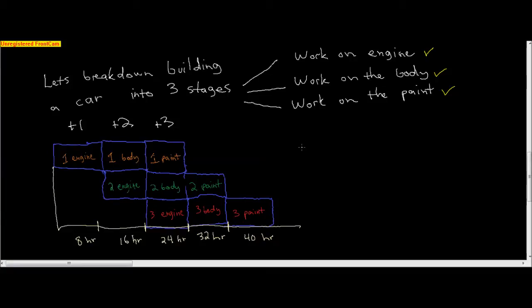If we break this into different steps, we can speed up the process by working on multiple stages at once. Before, it took 24 hours to build a car, times three to get three cars, so 72 hours total. Now we broke these into eight hour blocks. We did this in 40 hours. This is the benefit - we can speed things up by breaking it into different stages.